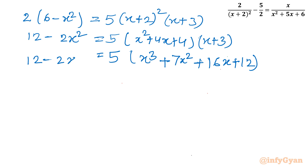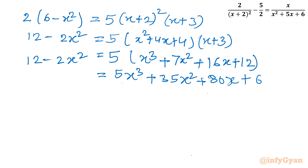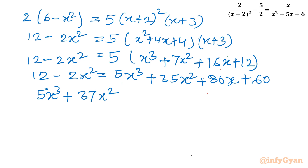The left-hand side is 12 minus 2x². Expanding with 5 gives 5x³ plus 35x² plus 80x plus 60. Taking all terms to the right-hand side gives 5x³ plus 37x² plus 80x plus 48 equals 0. One important observation: every coefficient of this cubic equation is positive, so obviously the root will be negative — only then will the equation equal zero.